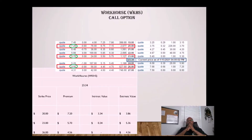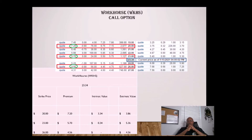Let's focus on the $20 strike price — circled in green. The premium for this is $7.20. Since that $20 strike price is in the money — it's lower than the current price — we have to figure out what portion is intrinsic and what portion is extrinsic. The strike price is approximately $3.34 away from the current price of the stock. That is the intrinsic value.